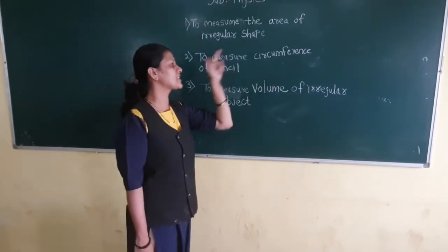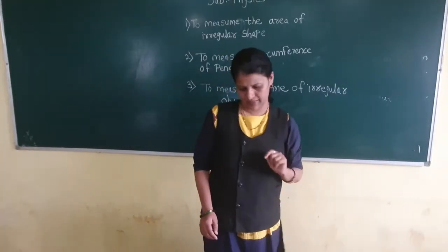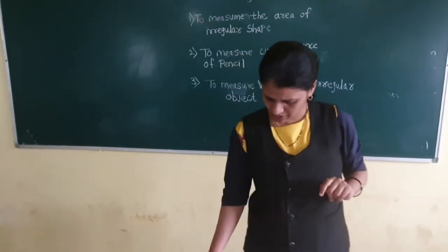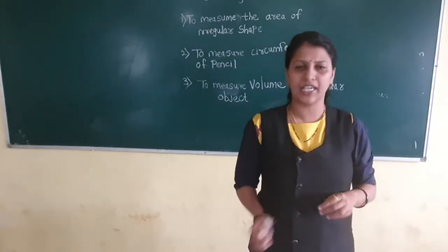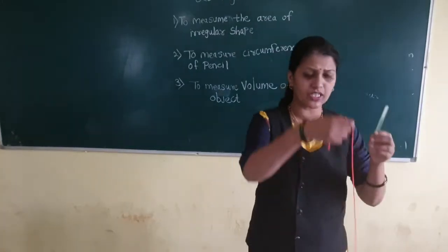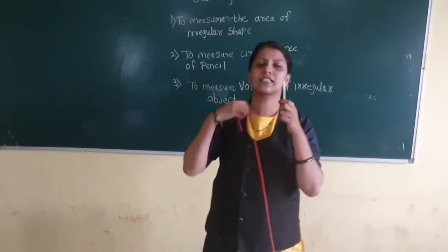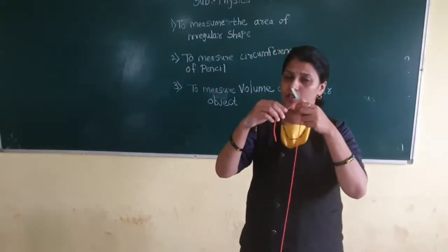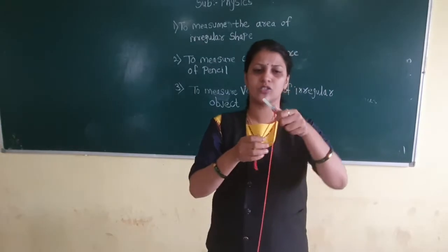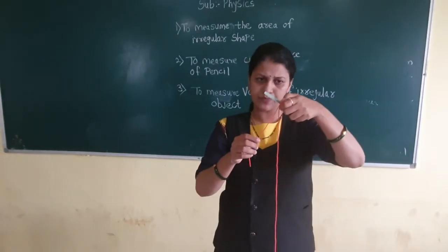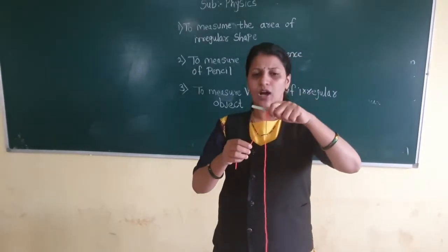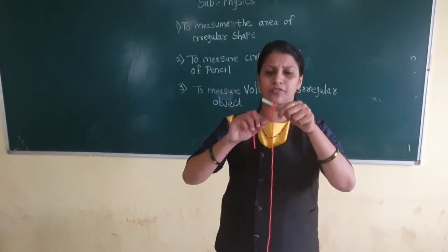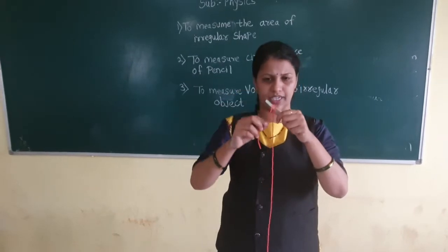Let's move to the second experiment: to measure the circumference of a pencil. I don't have a pencil here so we can use a pen. To measure the circumference, similarly to measure the thickness of a thread, you have to wrap the thread around the pen.